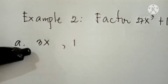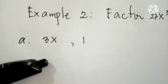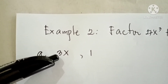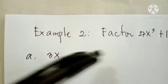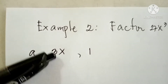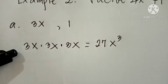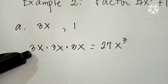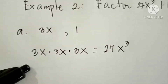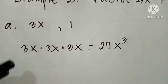For step 1, we get the cube root of the first and second terms. For 27x cubed, the cube root is 3x. To verify: 3x times 3x times 3x — 3 times 3 equals 9, 9 times 3 equals 27, and x times x times x equals x cubed. So the result is 27x cubed, confirming that 3x is the correct cube root of 27x cubed.